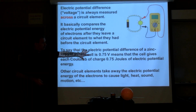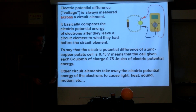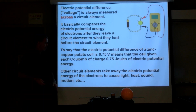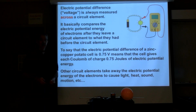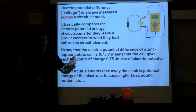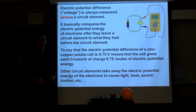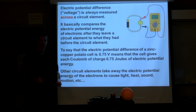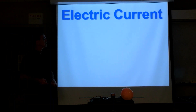Batteries and cells raise the potential energy, whereas other circuit elements take it away. The electrons have to give up energy to fight through a light bulb or a motor — they're converting electric potential energy into light, heat, motion, or sound.